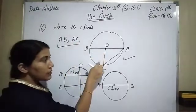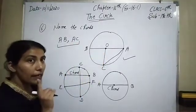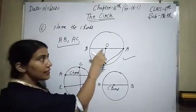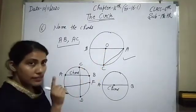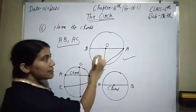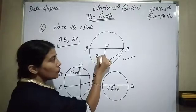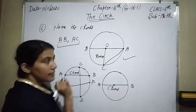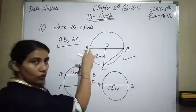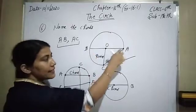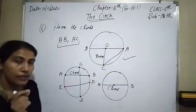Now look at OC — that is not a chord. That is a radius because it touches from the center to the circumference. So OC is the radius. The chords are: AB is the first chord, and secondly AC is the chord of the circle.